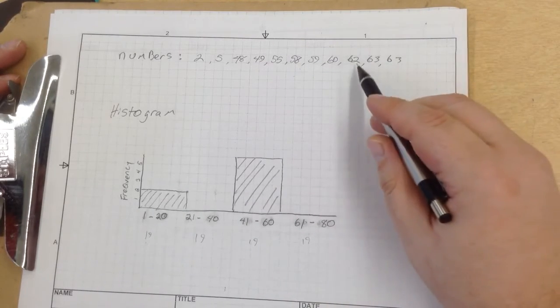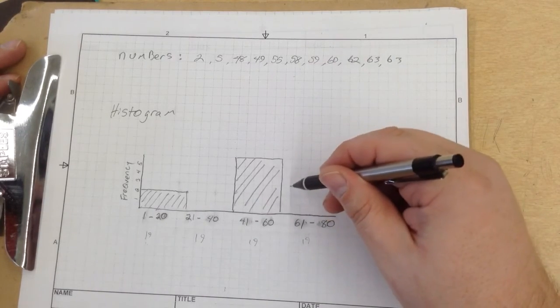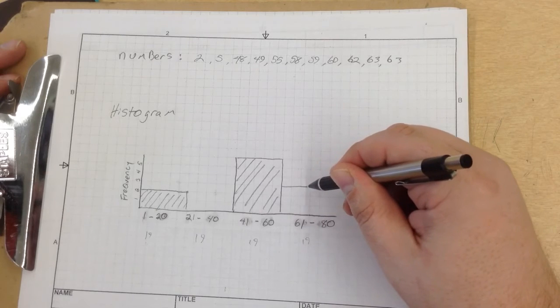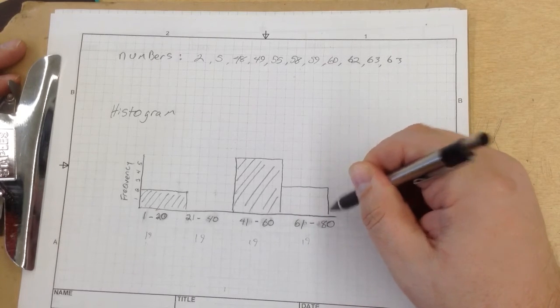Now, 61 through 80, we've got 1, 2, 3. So right there. Boom. Shade that in.